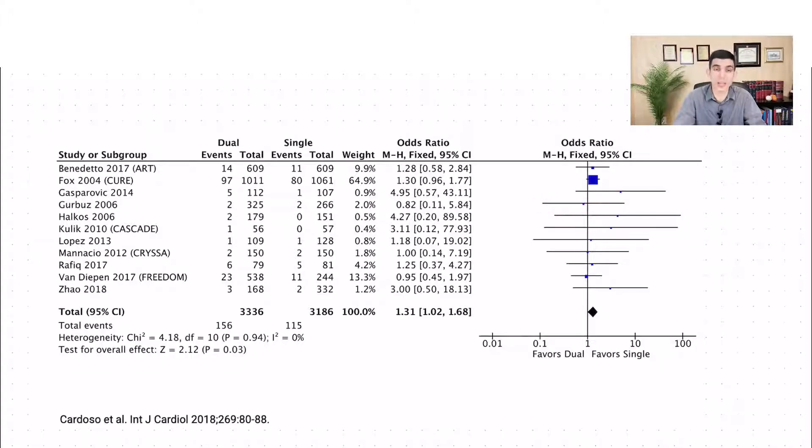And over here, we have this diamond that represents the actual result of the meta-analysis. In this case, an odds ratio of 1.31, that's the center of the diamond. And in the extremes, the width of the diamond represents the confidence interval itself.